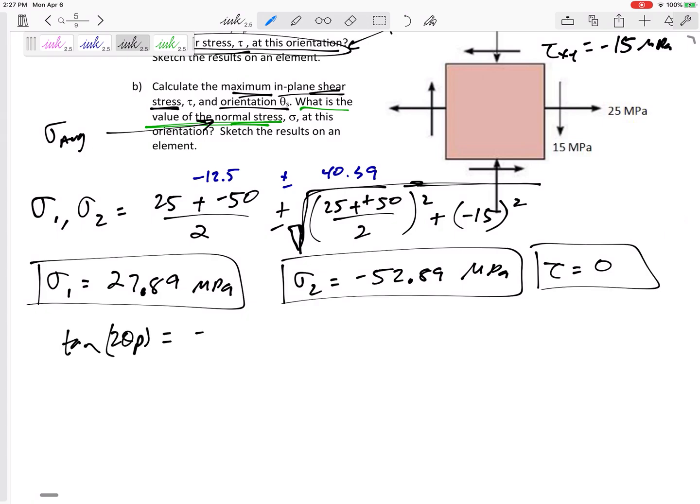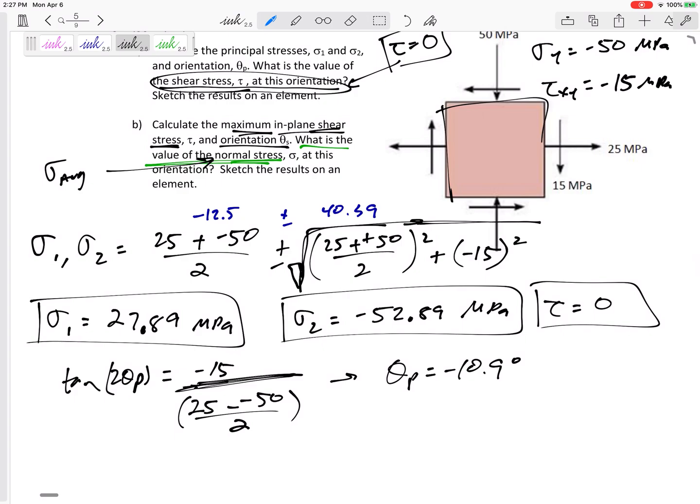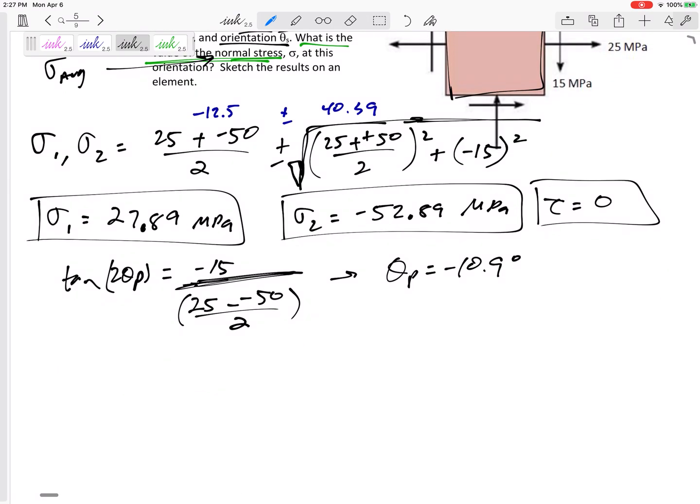Tangent of 2 theta p is tau, negative 15, over sigma x minus sigma y divided by 2. That's over that whole thing. Alright, alright, alright. So that would give me a theta p of negative 10.9 degrees. Be careful, that's a 2 theta p, so my calculator really gave me, you know, 21.8 or something divided by 2. My theta p is negative 10.9. So I need to sketch this. It was right here. This orientation I need to sketch it clockwise 10.9, clockwise 10.9. So this angle 10.9 degrees.